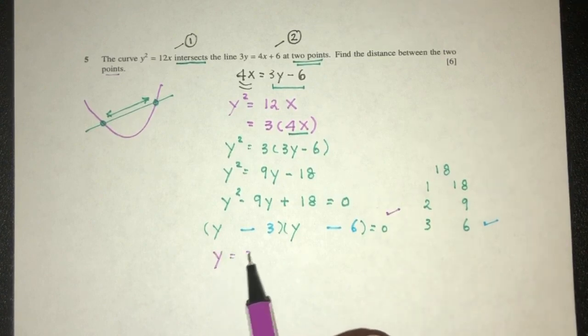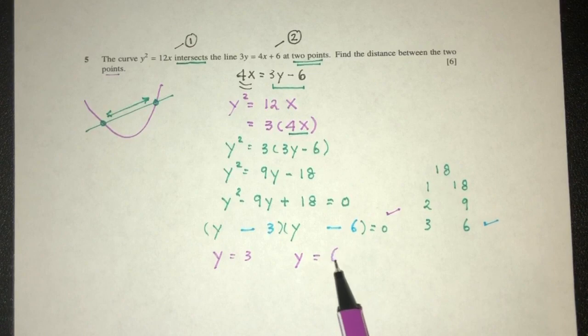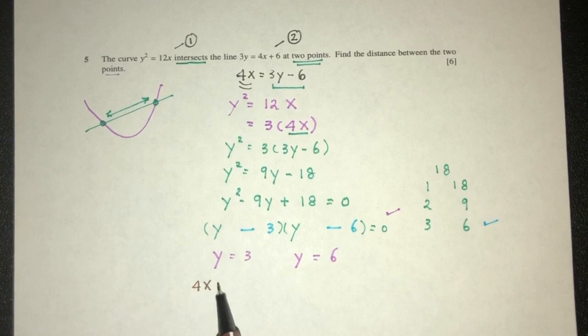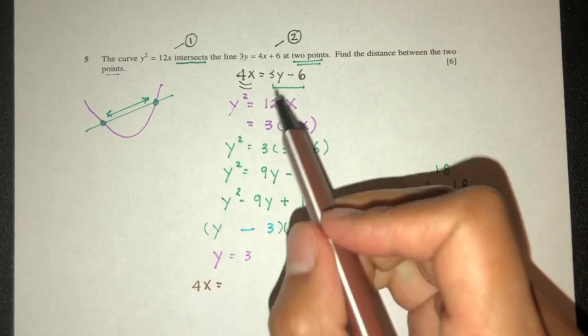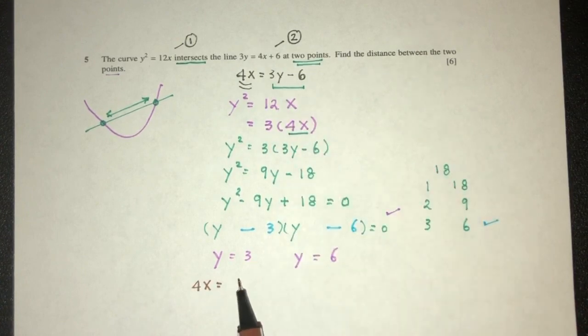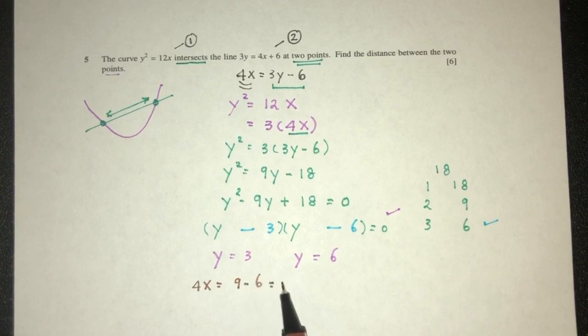So y can be 3 and y can be 6. Now moving on we have to find the value of x. So here we have 4x is equal to 3 times y minus 6. So 3 times y minus 6. That should be 3. x will be 3 over 4. Then it's simply 1.75.